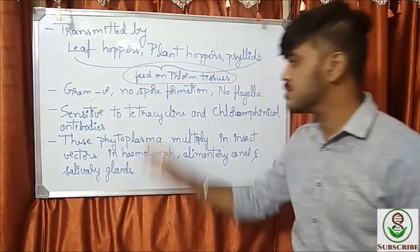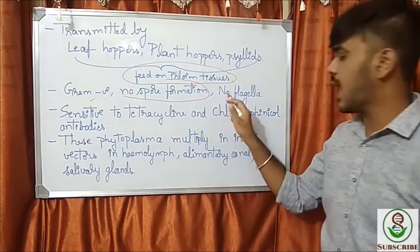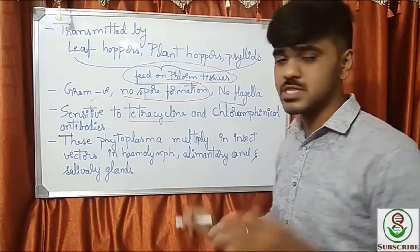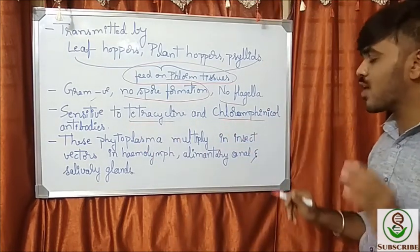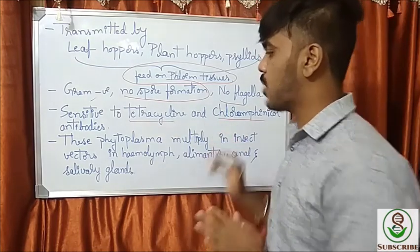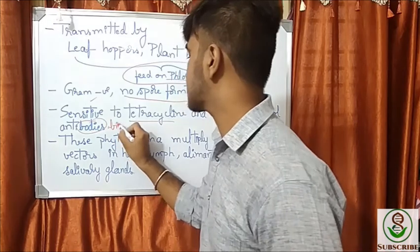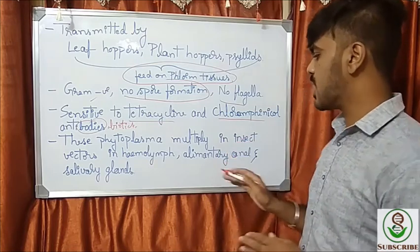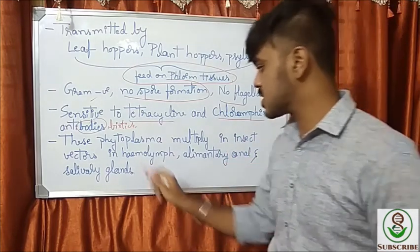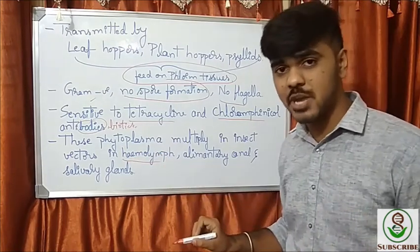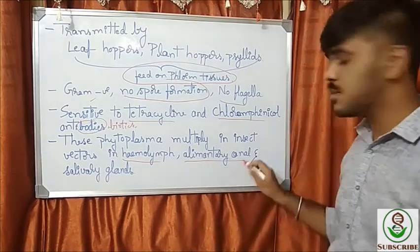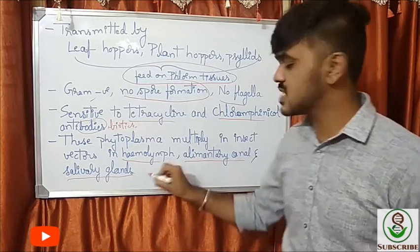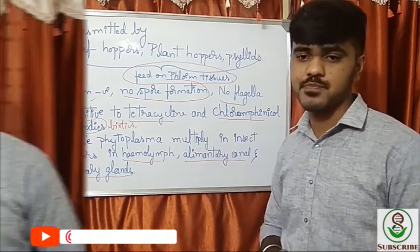Phytoplasmas are gram-negative, with no spore formation and no flagella. They are sensitive to tetracycline and also to chloramphenicol. Phytoplasma multiplies in the insect vectors — in the hemolymph, the alimentary canal, or the salivary glands of the insect vector.